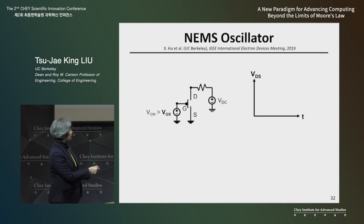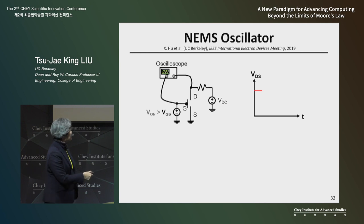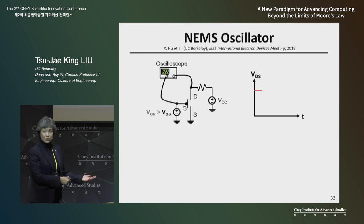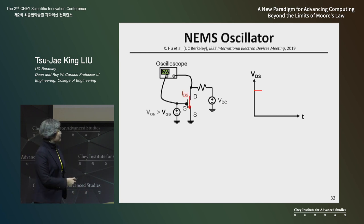But if we purposely make the gate voltage less than the turn-on voltage, and then we apply a voltage to the drain, the drain actually overlaps with the source. That also induces some small electrostatic force, which can be enough to cause the switch to turn on. If this switch turns on, this voltage here starts out at VDC.